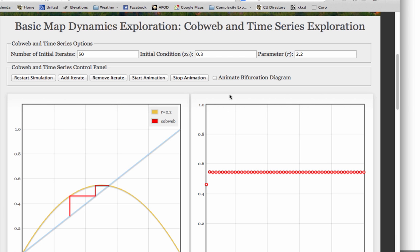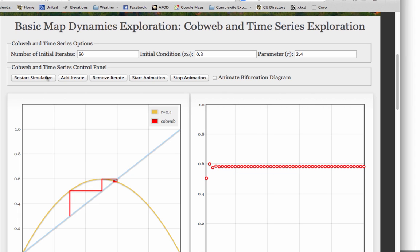Now let's go back and explore what happens if we change the r parameter while keeping x0 fixed. That is, using the same initial condition. There's r equals 2.3, r equals 2.4, r equals 2.5.